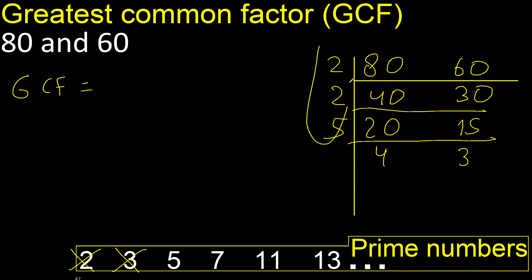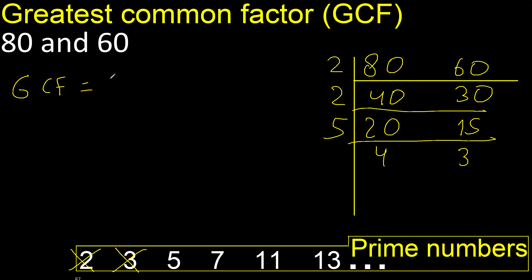Multiply: 2 multiplied by 2 is 4, 4 multiplied by 5 is 20. Finish.